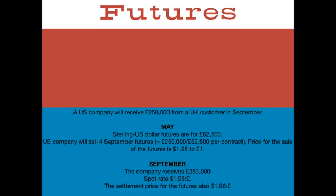So a US company will receive £250,000 from a UK customer. The sterling US dollar futures are for £62,500 — remember that's a set amount. So therefore they sell four of them: £250,000 divided by £62,500. They sell four of them, and the price is £1.98 to the pound.